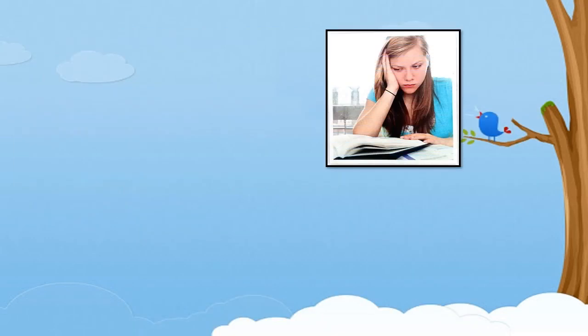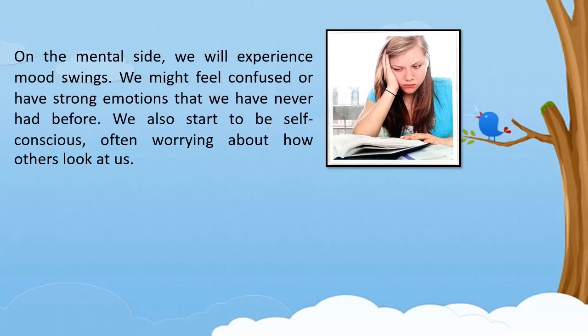Just as those hormones change the way your body looks on the outside, they also create changes on the inside. During puberty, you might feel confused or have strong emotions you've never had before. You might feel overly sensitive or become upset easily. On the mental side, we will experience mood swings, and we also start to be self-conscious.